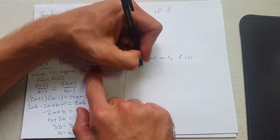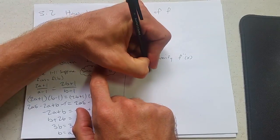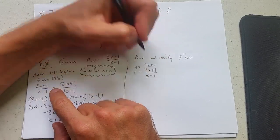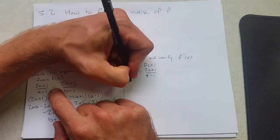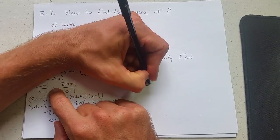So y equals f of x, which is 2x plus 1 over x minus 1. Now before I do anything else, we need to make sure step two, swap x and y. x equals 2y plus 1 over y minus 1.